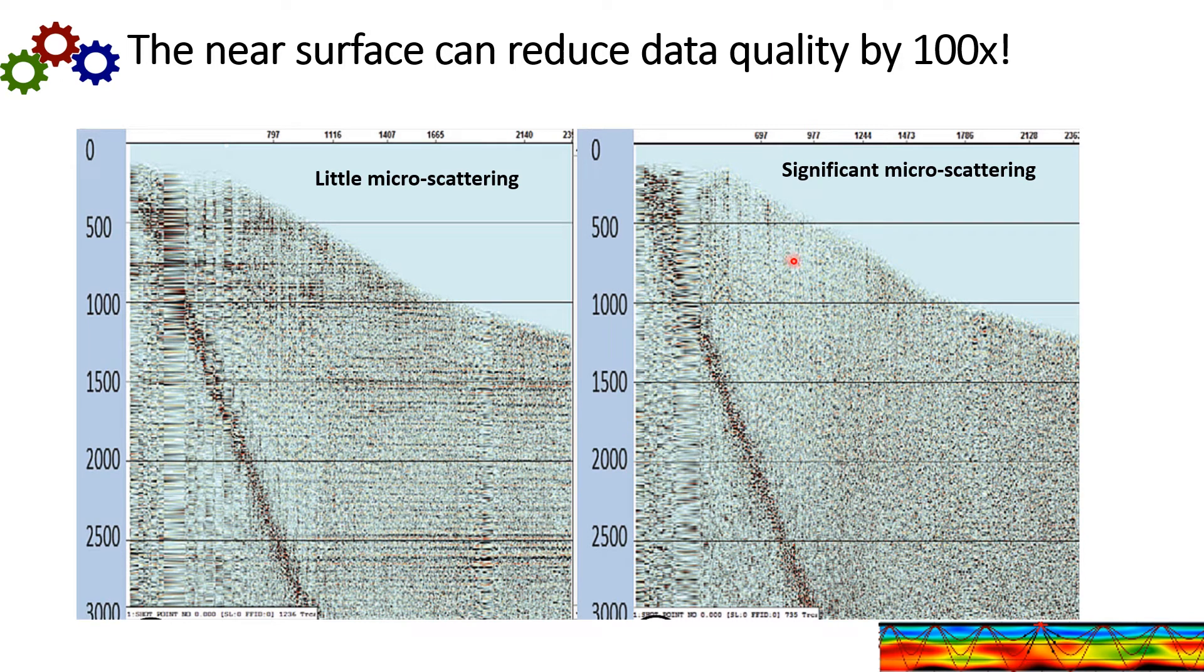On the right side is the result of bad surface scattering distortion. This is a real shot gather and it has NMO applied. Compare this with the shot gather on the left side. And here we've moved the sources and receivers only a few thousand meters. And you can see the difference of signal quality is quite significant. And the only difference is the surface geology, the surface characteristics.